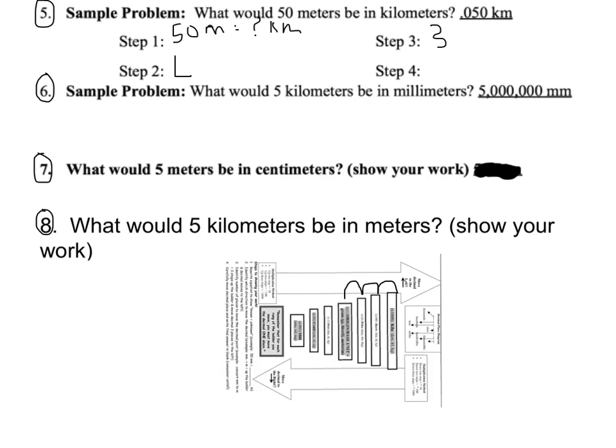And then step four, we need to rewrite our answer. So we started with 50 meters, and the decimal always starts there. We've got to go one, two, three. There's our new decimal and we had to add a zero. So the correct answer is 0.05 kilometers.